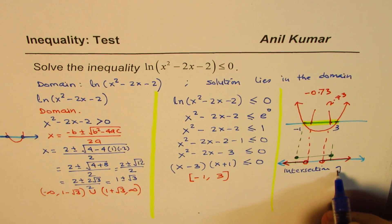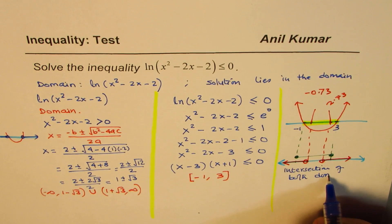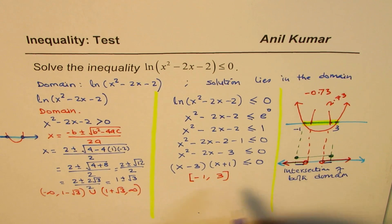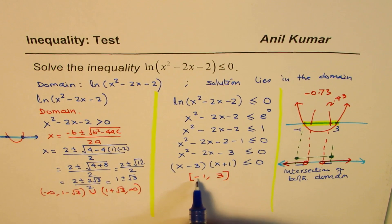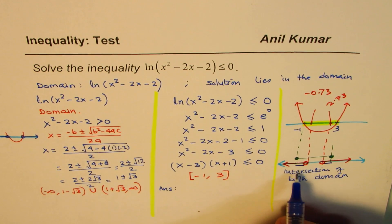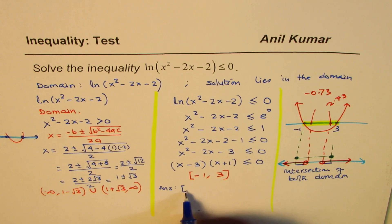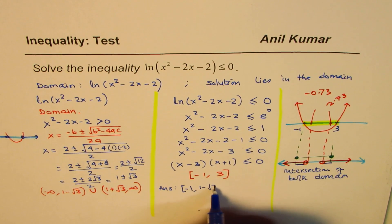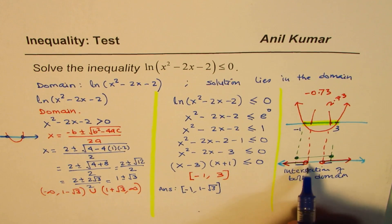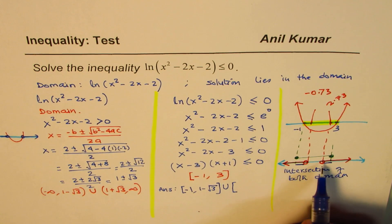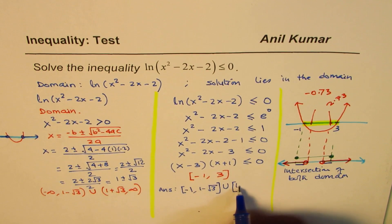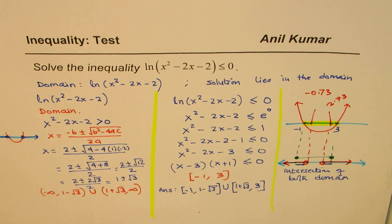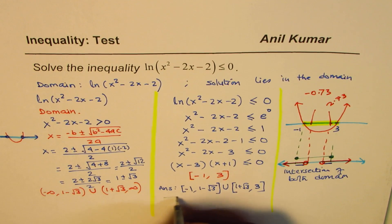The intersection gives us the final answer. It is from minus one up to 1 - √3 (including minus one, excluding 1 - √3), union the interval from 1 + √3 to 3 (excluding 1 + √3, including 3). So that becomes the solution of this particular inequality.